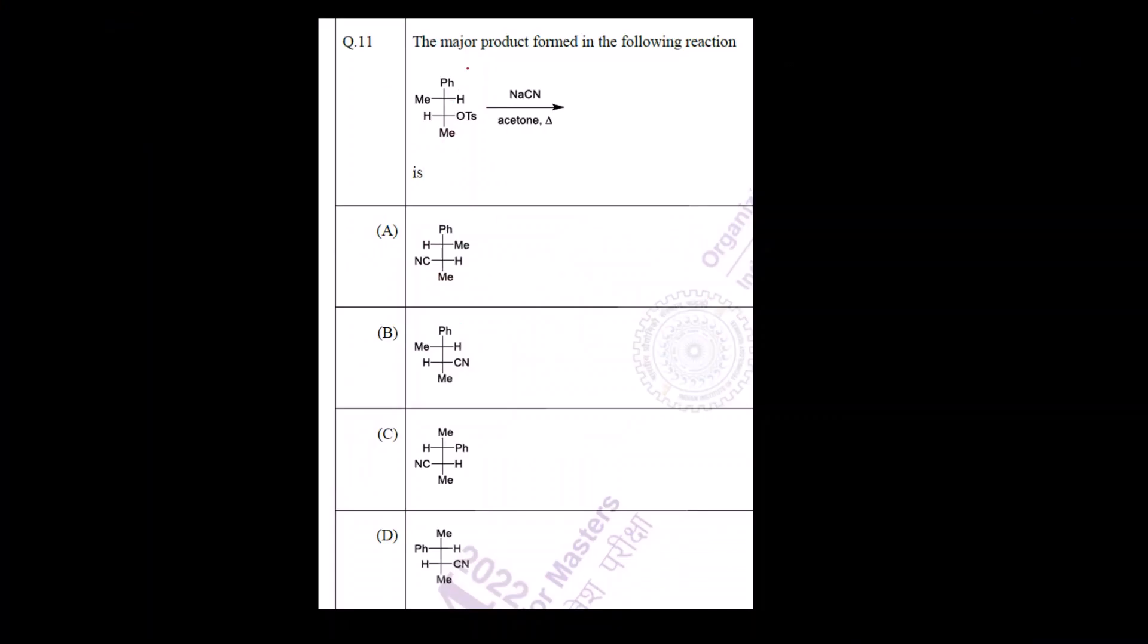First, from this reaction you can see OTS. OTS is a very good leaving group. What is the structure of OTS? OTS means tosylate, which is a sulfonate ion with CH3 at the para position. That means this is the toluene ring plus it is a part of sulfonic acid. Sulfonic acid is benzene and SO3H. That is why this group is called tosylate. It is a very good leaving group.